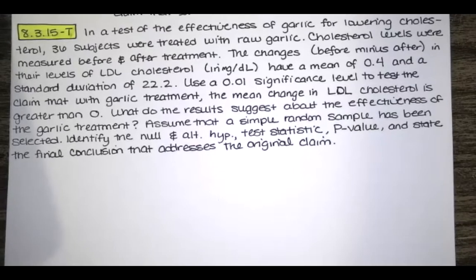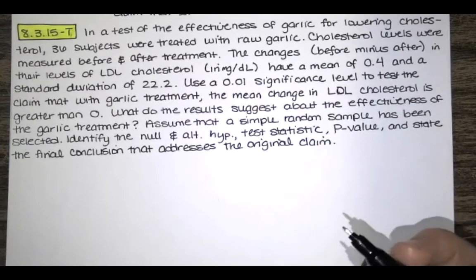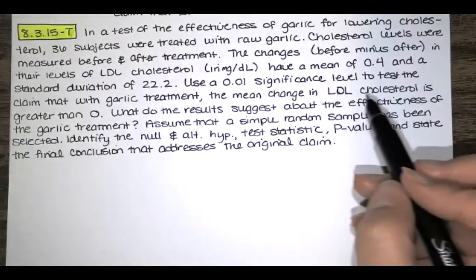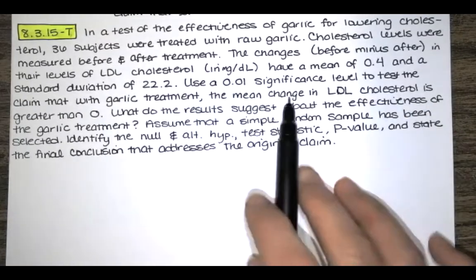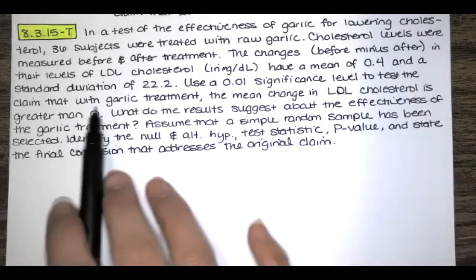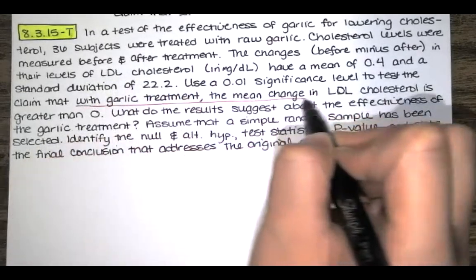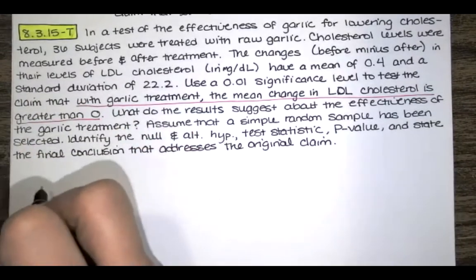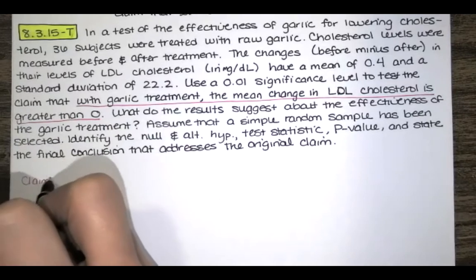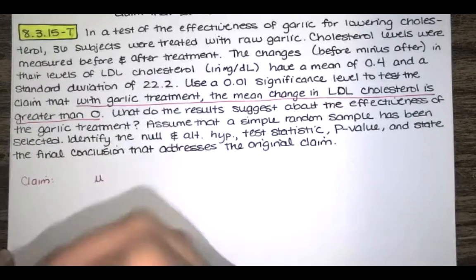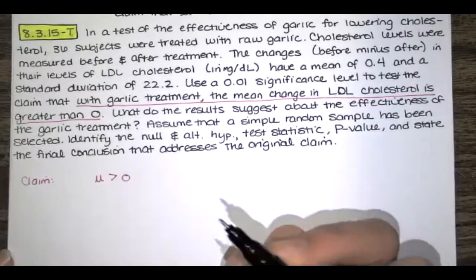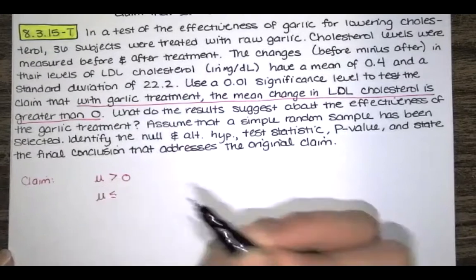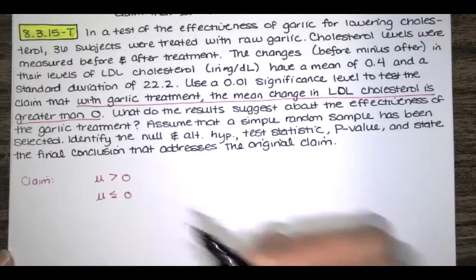The first thing we do is look at the problem statement to find the original claim in order to identify the null and alternative hypotheses. The claim is that with garlic treatment, the mean change in LDL cholesterol is greater than zero. So the claim is that the mean of that change is greater than zero. If that's not true, it would have to be less than or equal to zero.